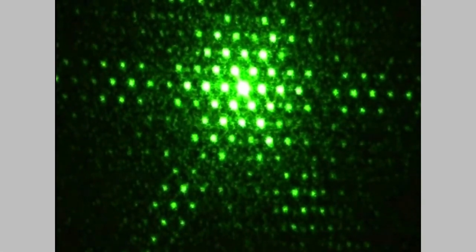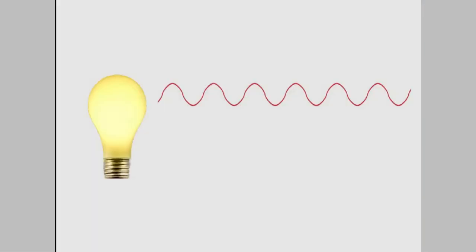But now we have a problem. These experiments seem to prove that light acts like a wave. But as we saw in an earlier video, Einstein showed that light is made of photons, which are particles. So what's going on here? Is light a wave, or is it a particle? Or is it both? Or is it something completely different?